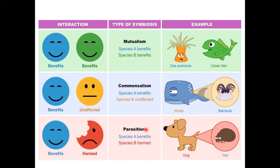Parasitism: one is happy, one is unhappy. If a tick gets onto your dog, the tick will bite the dog and draw blood. The tick lives and the dog is made to itch. If the situation gets bad enough, ticks can take so much blood that they can kill the dog — a hurt species and a benefited species.